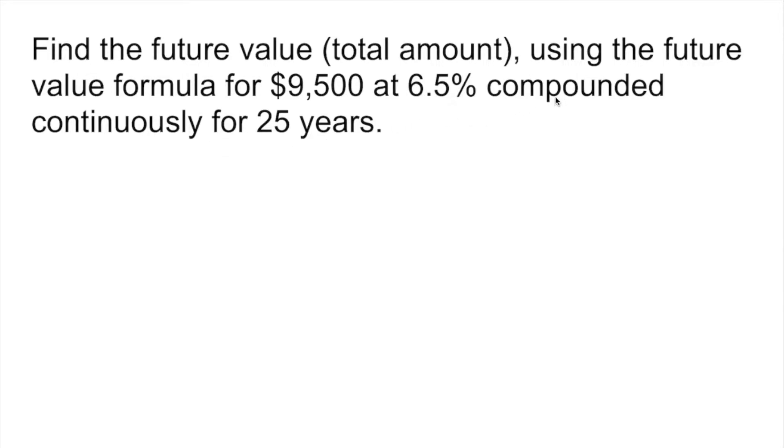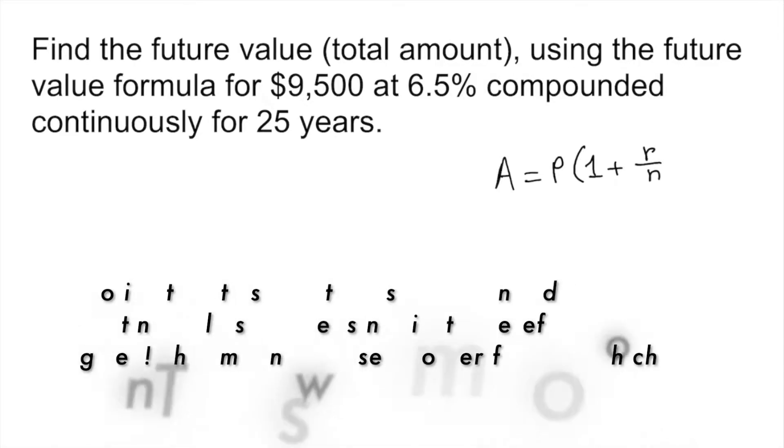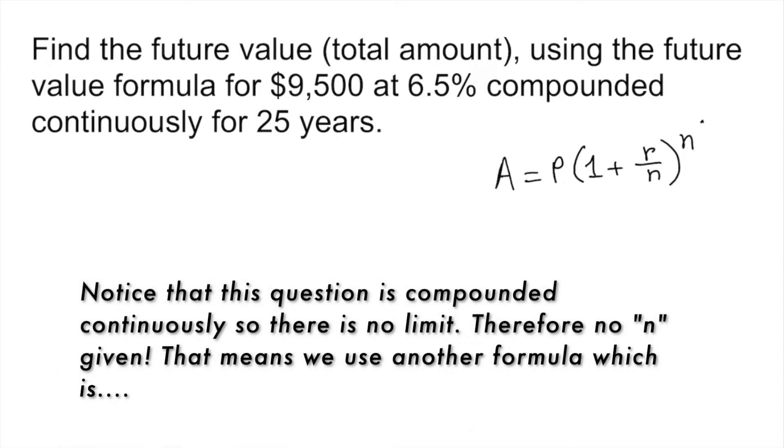Since it is compounded, we can come up with this formula right away: A equals principal times open parenthesis 1 plus r over n to the power n times t. This is the compounded formula. Remember, this is compounded theoretically. The problem is continuously, so we cannot use this formula anymore because we don't have any n.